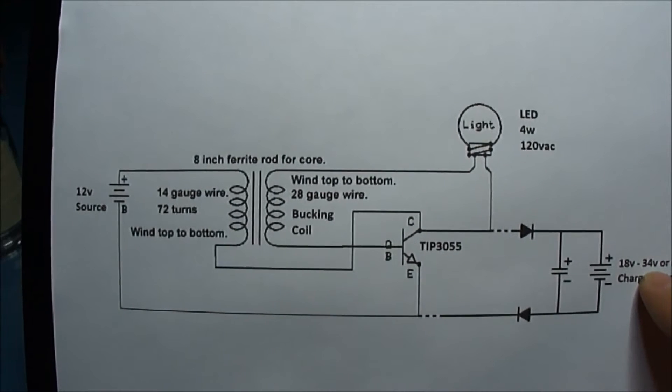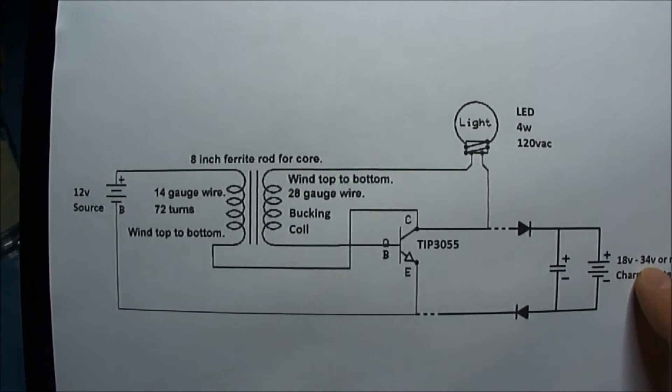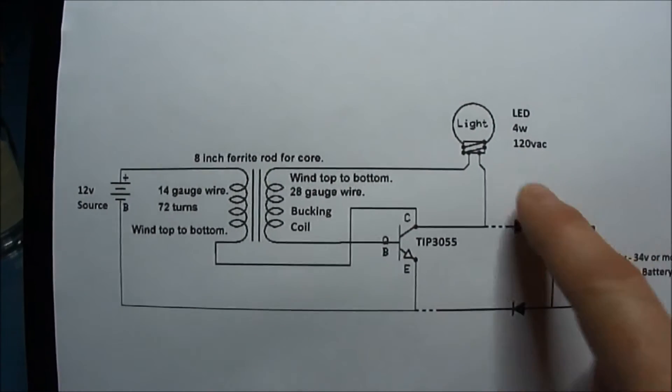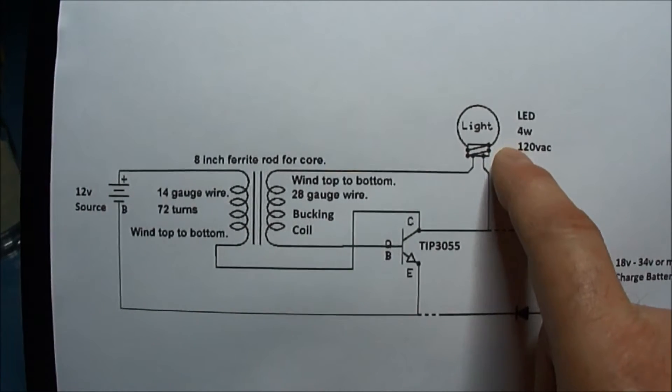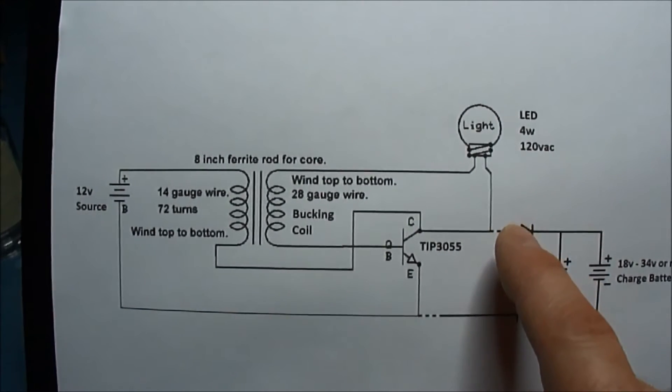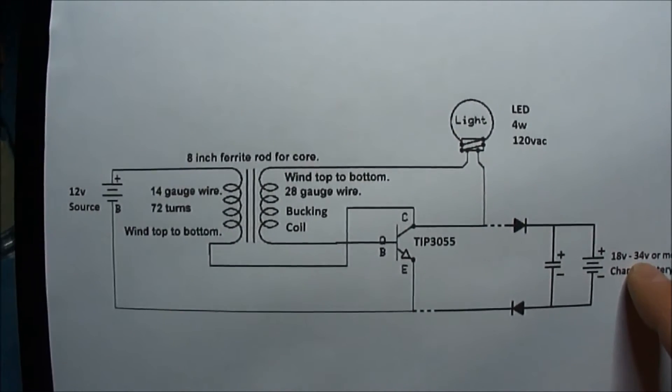But with the cap, just the cap and not the battery, the voltage in the cap will rise to about 34 volts. And that's with the 4 watt LED light that I have here. If I put a 15 watt incandescent, I believe this goes up around 70 volts. I'll have to try that again.